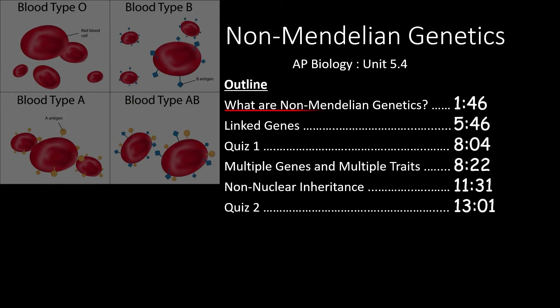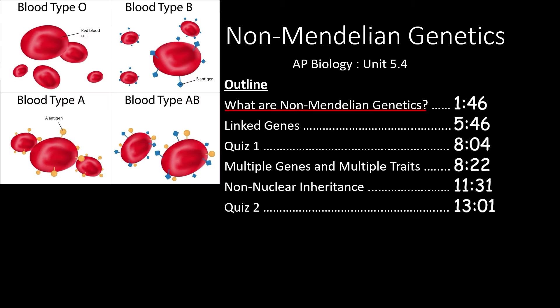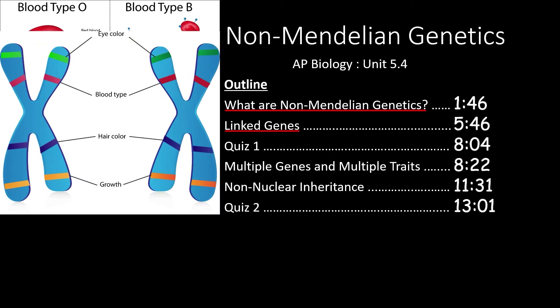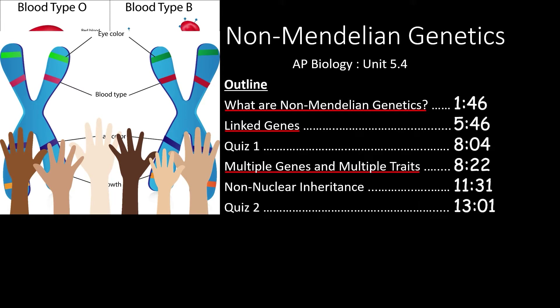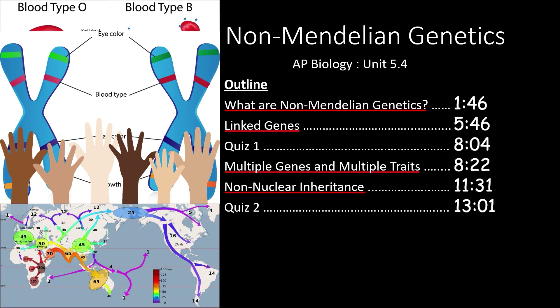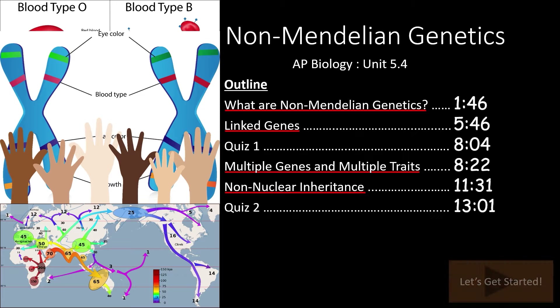We'll start by defining non-Mendelian genetics, then take a closer look at linked genes and how they alter phenotypic ratios. After the first quiz, we'll take a look at several other types of non-Mendelian inheritance. If you only need to review one of these sections, feel free to skip forward to the times outlined here. Otherwise, let's get started.